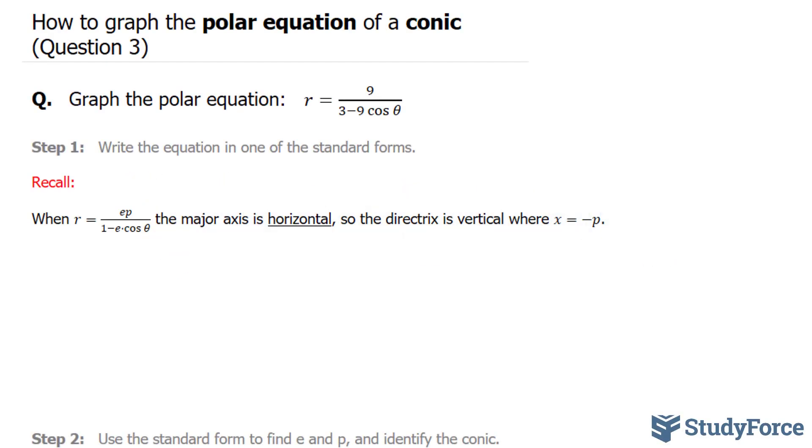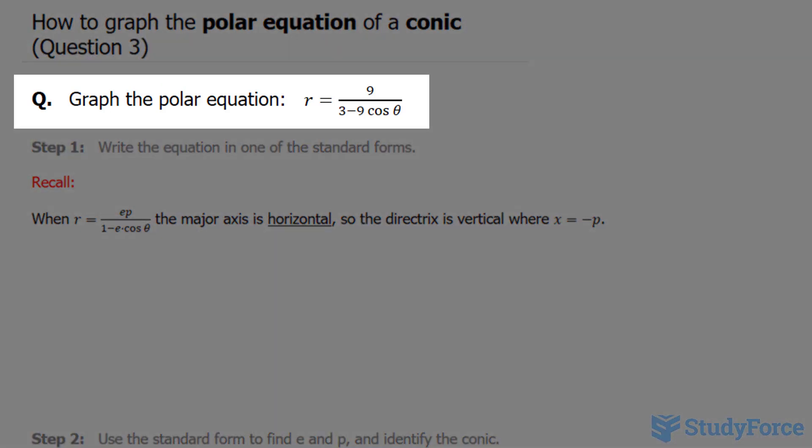In question 3 of this series, I'll show you how to graph the polar equation of a conic. The question we have is graph the polar equation r equals 9 over 3 minus 9 cosine theta.